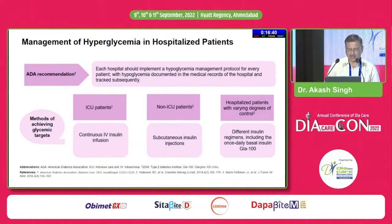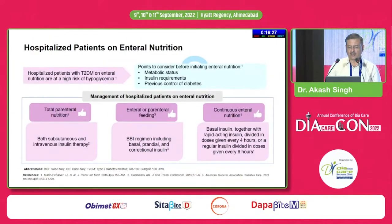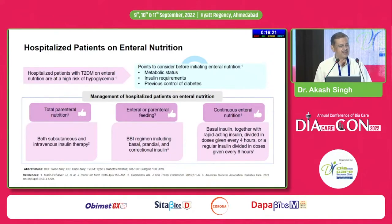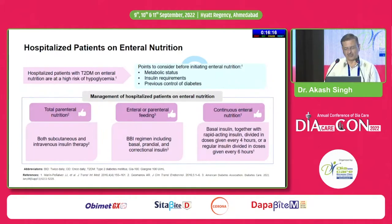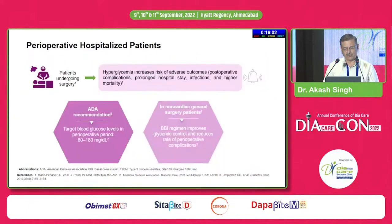The type of treatment in hospitalized patients may be continuous IV infusion in ICU critical patients, or basal bolus insulin in stable patients. If the patient is already on oral agents and is very stable, you can continue with that. For patients on total parenteral nutrition, you may require basal with prandial insulin or insulin infusion. If the patient is on nasogastric tube feeding, you can go for basal insulin with a sliding scale correctional insulin. Depending on the condition, the insulin therapy has to be adjusted accordingly.